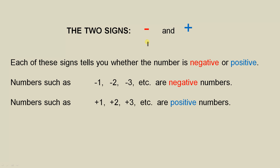The two signs, negative and positive. Each of these signs tells you whether the number is negative or positive. Negative one, negative two and negative three, etc., are negative numbers because of this sign.